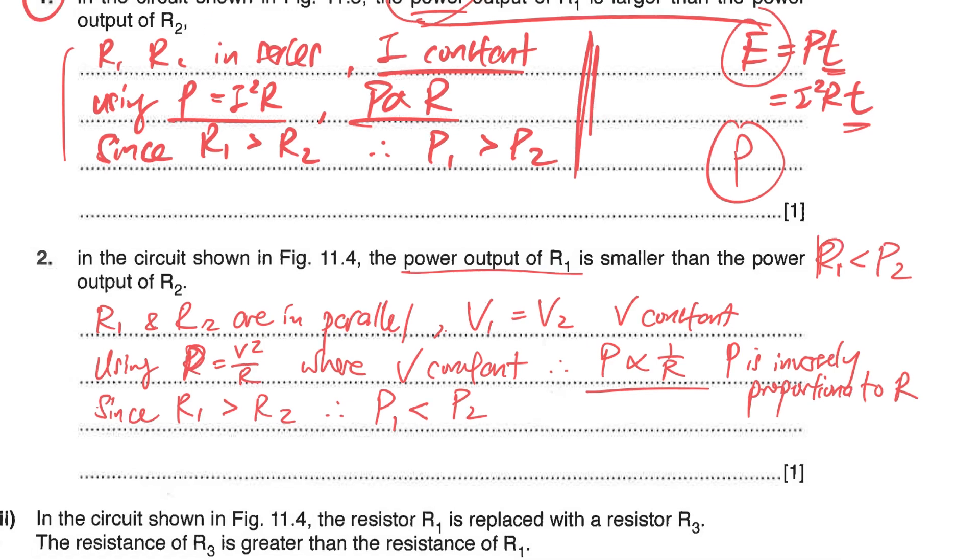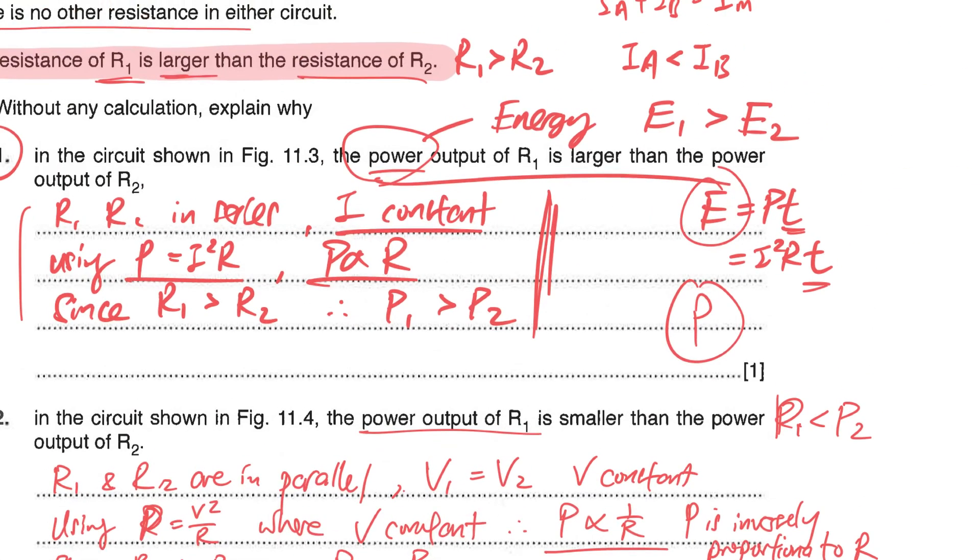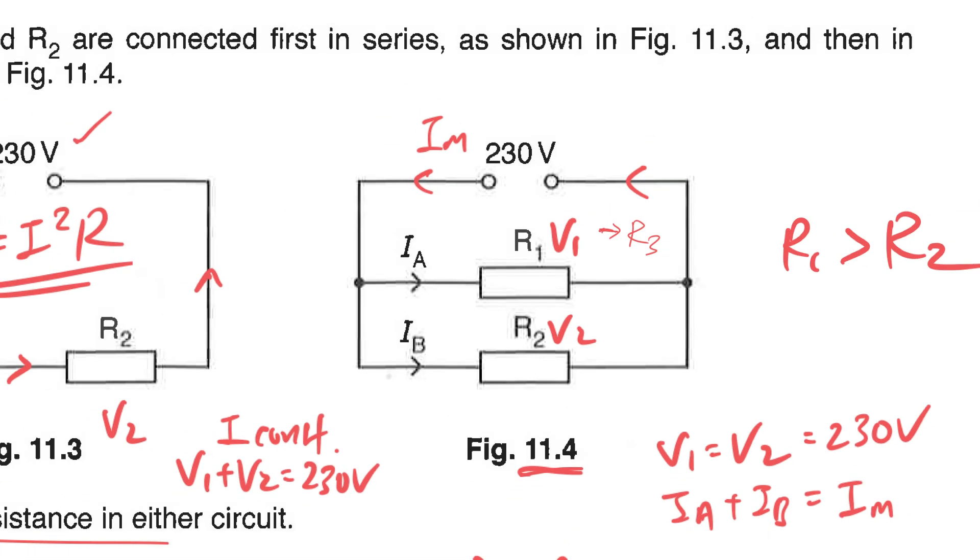For the last part they say that for the parallel circuit 11.4, R1 now is replaced with another resistor R3 and R3 is greater than the resistor of R1, much greater. They ask you to complete what will any change to IA and your IB. Now you know that even though if I change it to my R3, R3 and R2 they are still parallel.